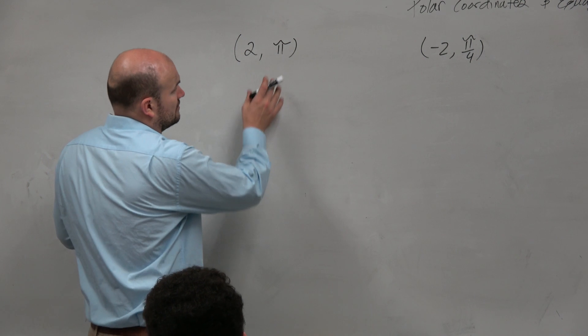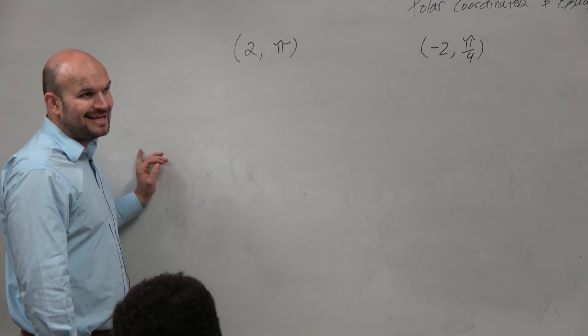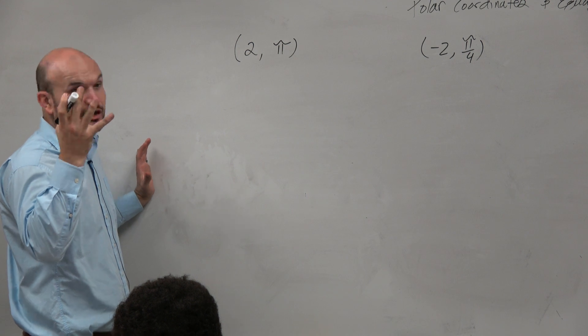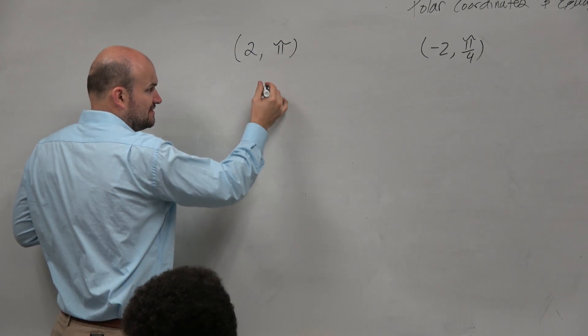So 2 comma pi. Can we graph that to maybe just get an understanding of where this is? Yes, can we graph this?